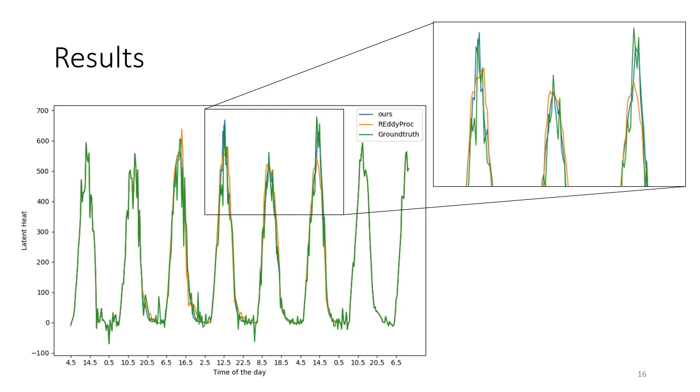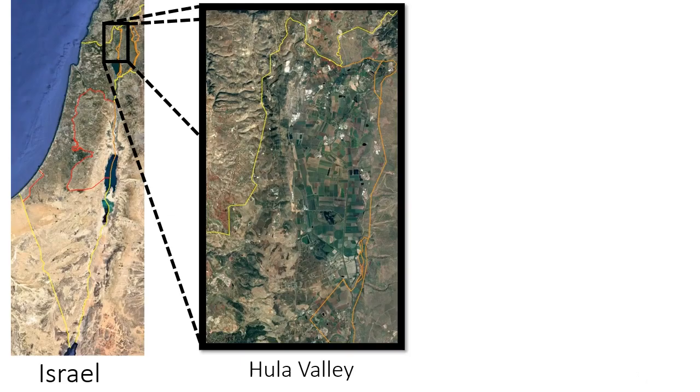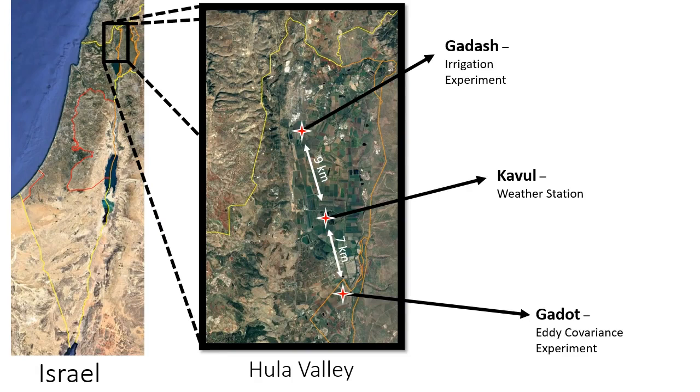After showing the performance of our neural network on the gap filling problem, we will now focus our attention on the experimental evaluation of the network in real irrigation tests. To this end, we prepared an experiment in the north of Israel in the Hula Valley. The site to the south is called Gadot. This is where we actually collected the data for the eddy covariance prediction and the network training. We used the data from the weather station at Kavoul, and we conducted the actual irrigation experiment at Gadash, on the north.